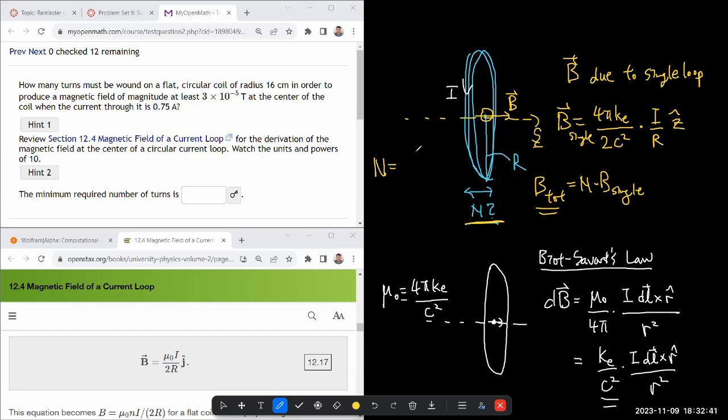So n is equal to B_total, for which I'll plug in the given number, 3 times 10 to the minus 5 tesla, that is small, divided by this expression here. So 4π times K_E over 2c squared times current, which we have, divided by r, which we have.